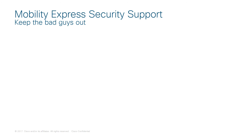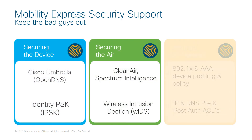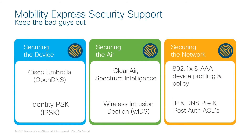Security is always top of mind for any customer. Mobility Express helps you keep out the bad guys by securing the device, the air, and the network. With robust .1x, AAA, and ACLs, you can segment the network, set policies, and protect the network. Cisco CleanAir Spectrum Intelligence, available with AirOS 8.6 on 1K APs, and Wireless Intrusion Detection System combine to detect rogue APs, clients, and other interference sources. The system is smart enough to self-heal and self-optimize the air by changing channels within seconds, ensuring the air is always clean and performance is optimized with minimal disruption. With enhancements in AirOS 8.8 MR1 and 8.8 MR2, you can now protect your devices through Umbrella and Identity PSK (IPSK).